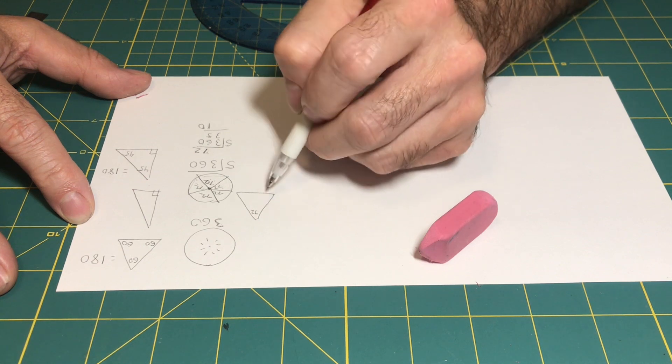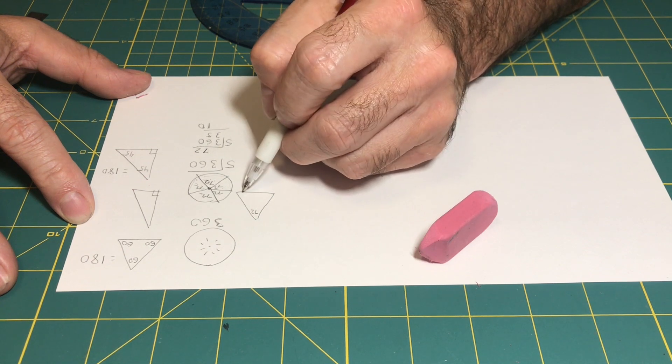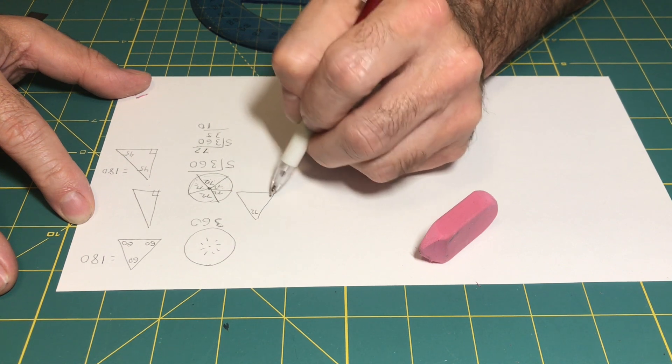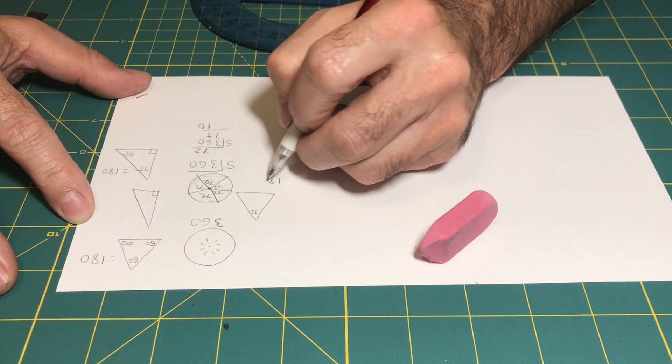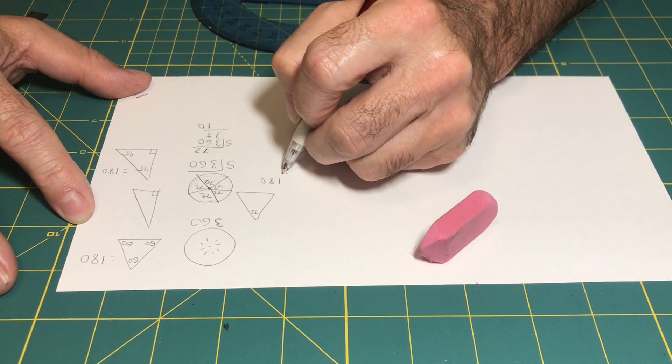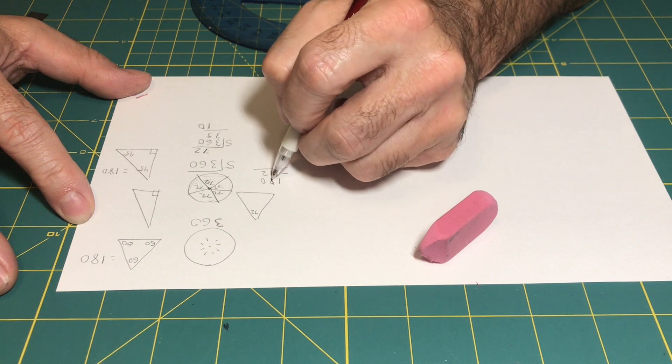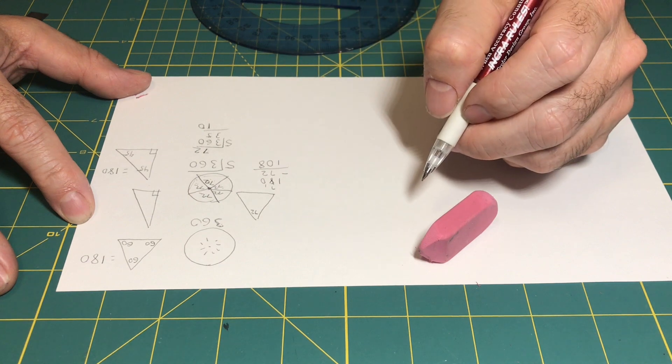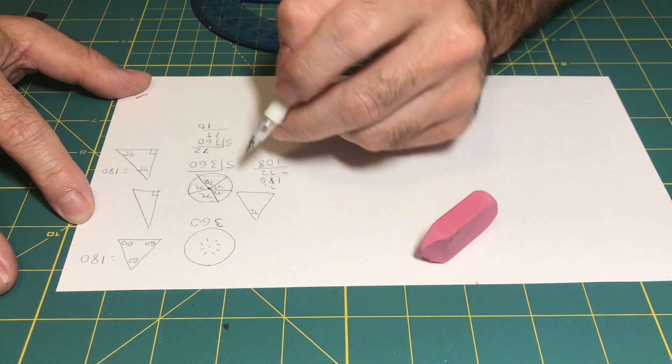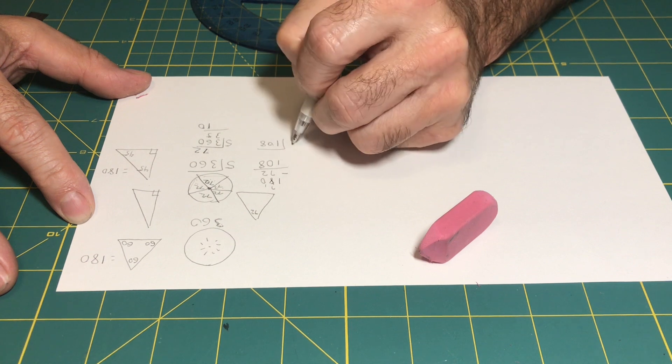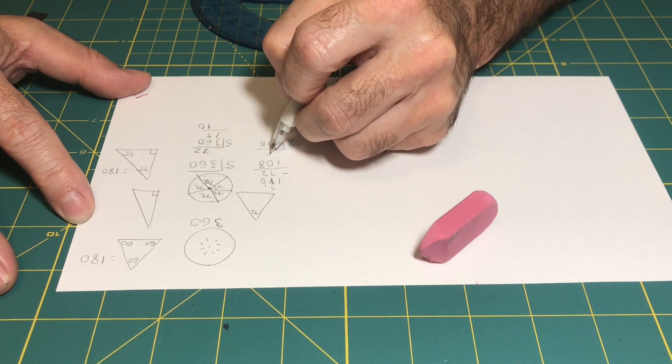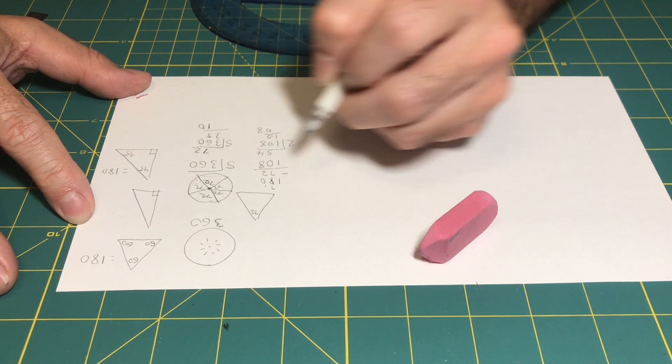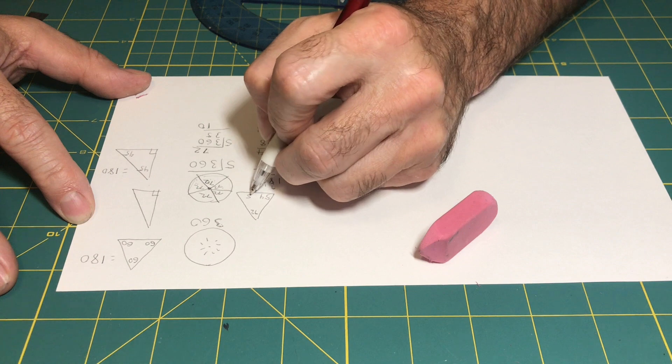So if that's 72 degrees, this is 180 minus 72 divided in half. So we take 180 minus 72, and it comes to 108 degrees. 108 divided in 2 gives you 54 degrees. 54 and 54.